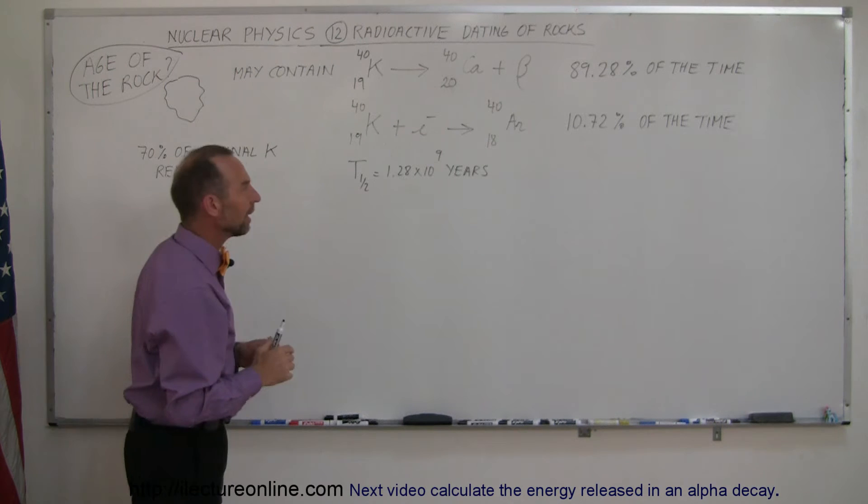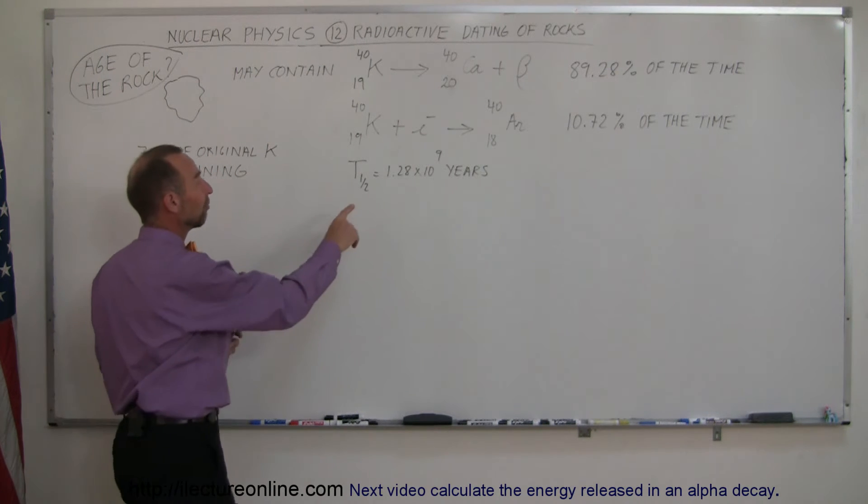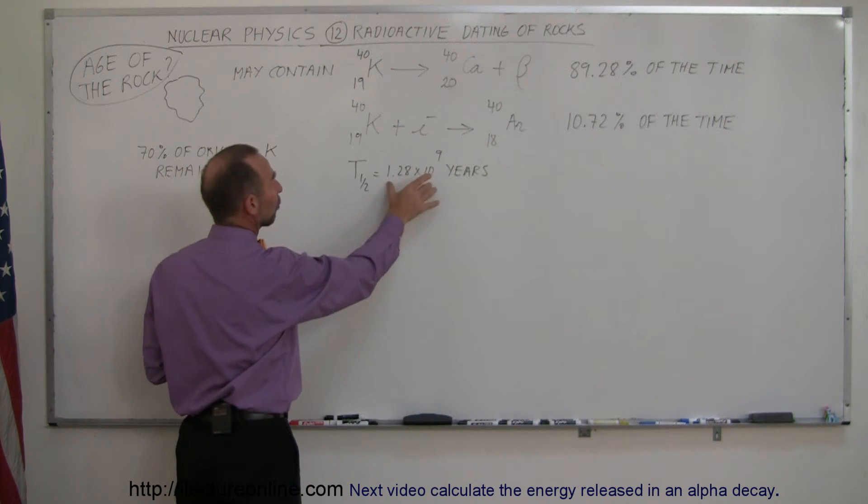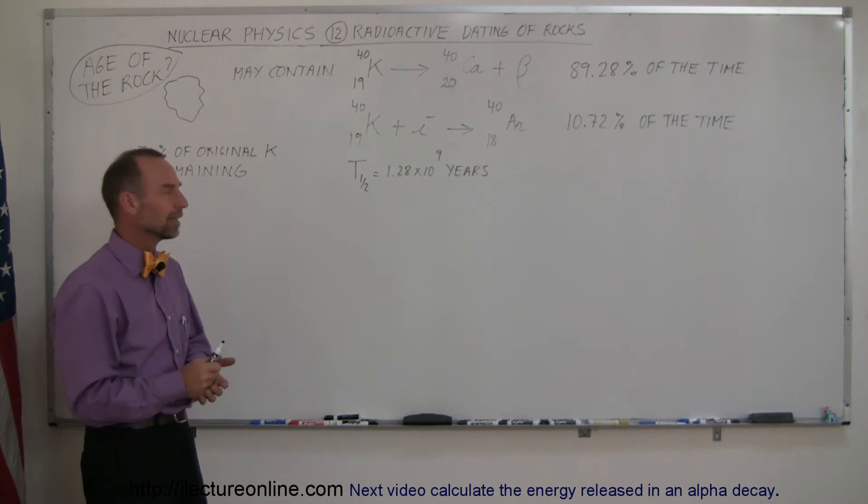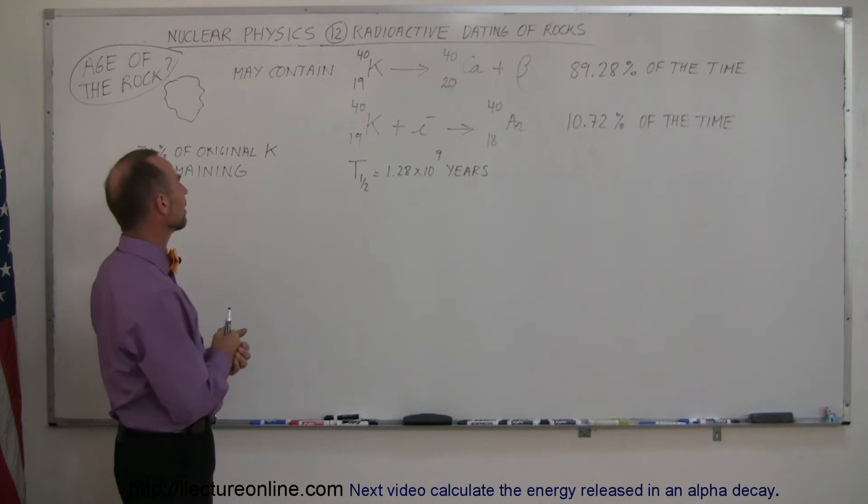Since we understand that, and knowing that the half-life of potassium-40 is 1.28 times 10 to the 9 years, which is 1.28 billion years, a billion and 280 million years,